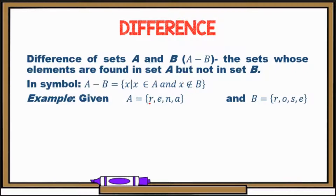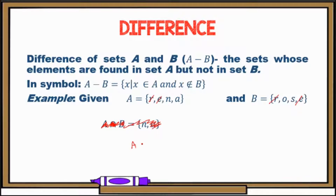Using the same example: set A equals R, E, N, A and set B equals R, O, S, E. All elements of A remain in A minus B, except for those also in B. The common elements R and E are discarded. So A minus B is equal to the set of all elements in A that are not in B: we have N and A.